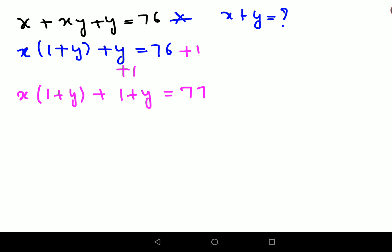Next what we can do over here is we can take (1 plus y) common. So let's do that: (1 plus y) and then I'm left with (x plus 1) equals to 77. Now after this we can't do much, it's basically a dead end.